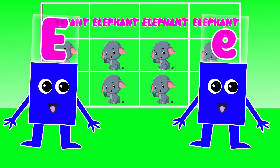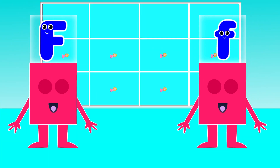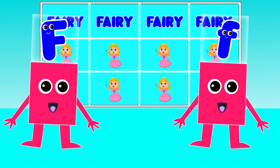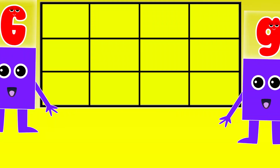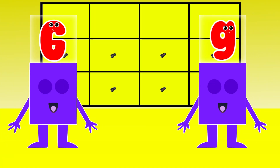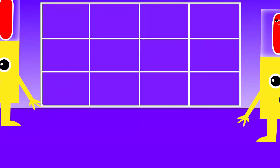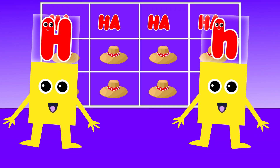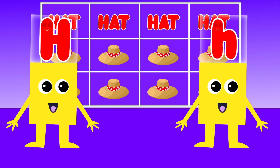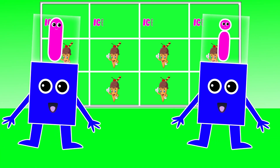E is for Elephant. E, E. Elephant. F is for Fairy. F, F. Fairy. G is for Gorilla. G, G. Gorilla. H is for Head. H, H. Head.